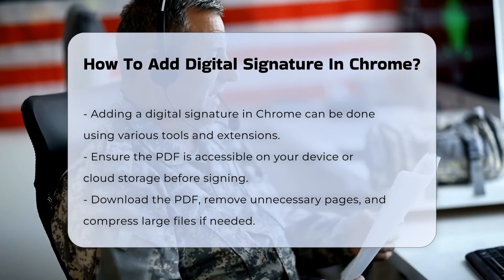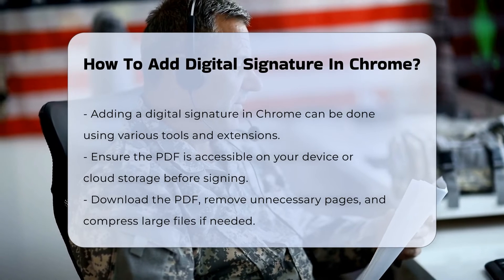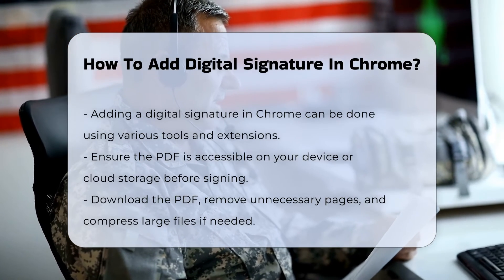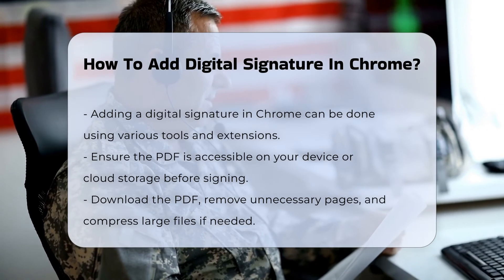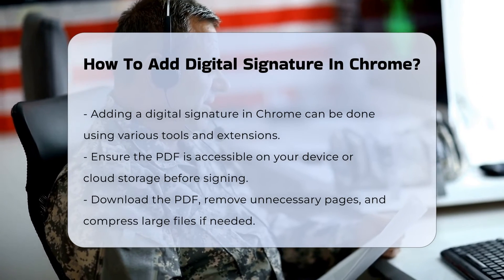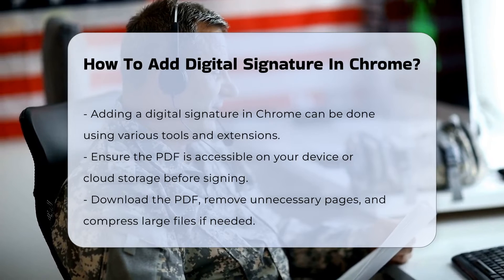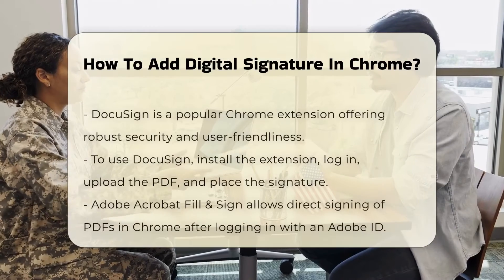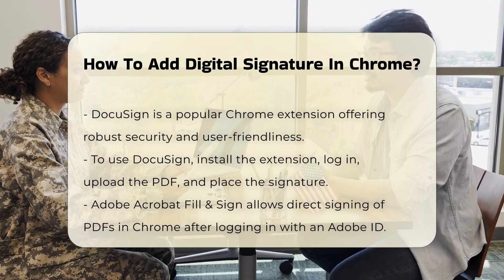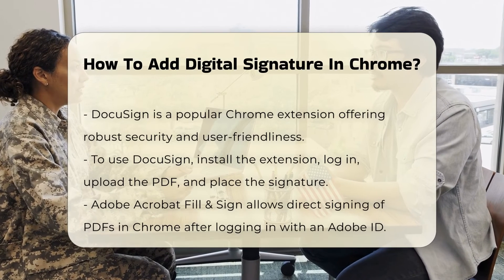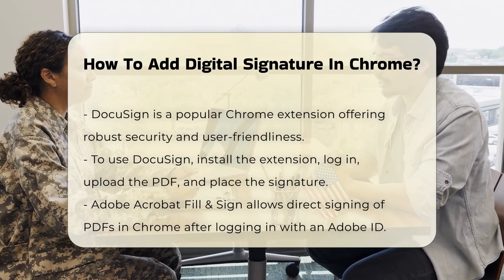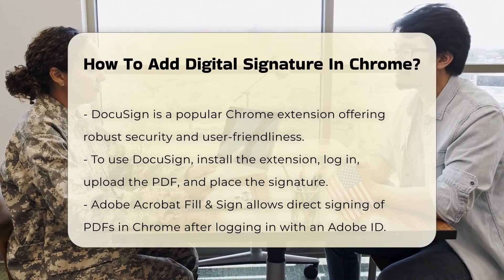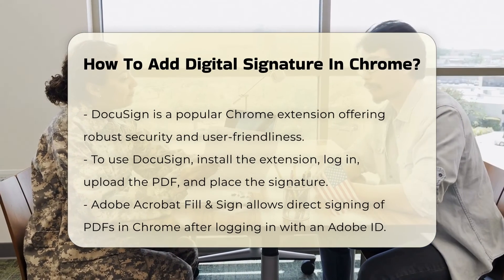Using Chrome Extensions. Several Chrome extensions simplify the process of signing PDFs. Here are some of the most commonly used. DocuSign is a popular extension that offers robust security features and ease of use. To use DocuSign, install the extension from the Chrome Web Store, create or log in to your DocuSign account, upload the PDF, drag and drop the signature field to the appropriate location, and click Finish to save the signed document.